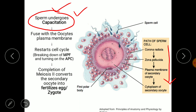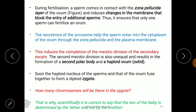After the sperm binds to the membrane of the secondary oocyte, the breakdown of MPF takes place and APC is activated, allowing meiosis II to complete, finally forming the fertilized egg or zygote.